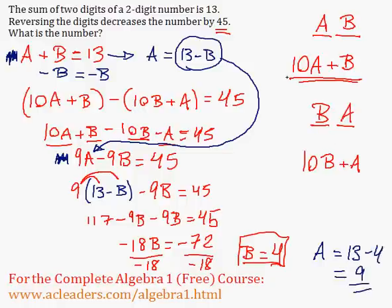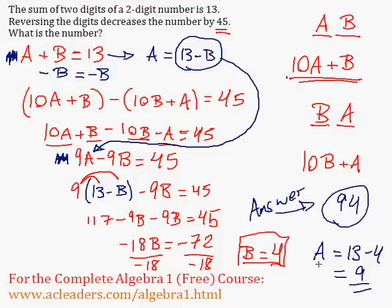So our original number is just AB, that would be just 94. If you can't see that though, so this is the final answer, we can plug A and B into this expression here.